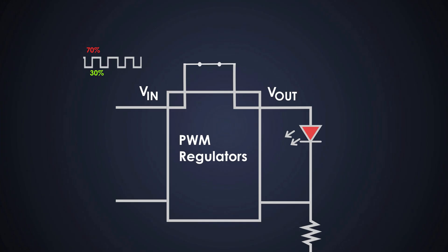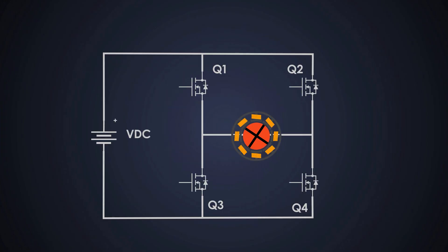We call that 70% duty cycle. The higher the duty cycle, the brighter the bulb, or in case of the motor, the faster our motor spins.